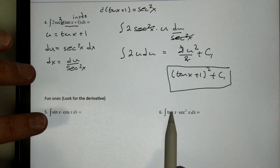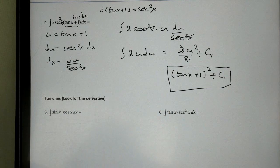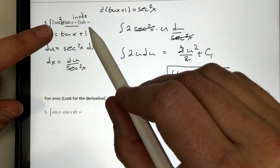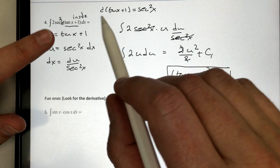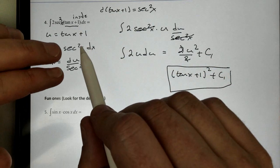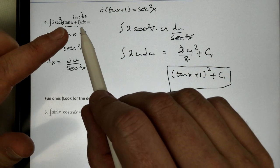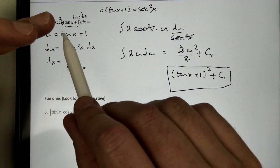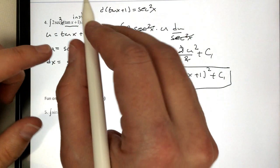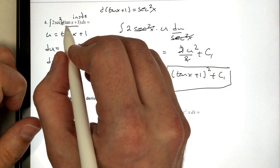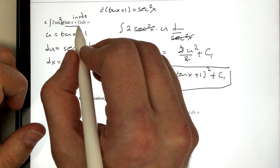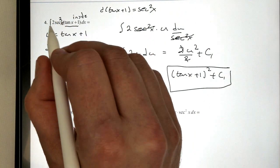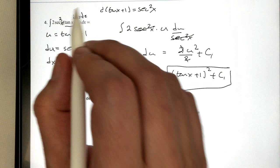The same thing for probably number six. However, we talked about an example like in number four up here, where we said one way to find out what u is equal to is to determine which one has a derivative of the other. For example, on the inside here, tangent of x plus one, its derivative was secant squared, and that derivative was on the outside right here, this secant squared of x.